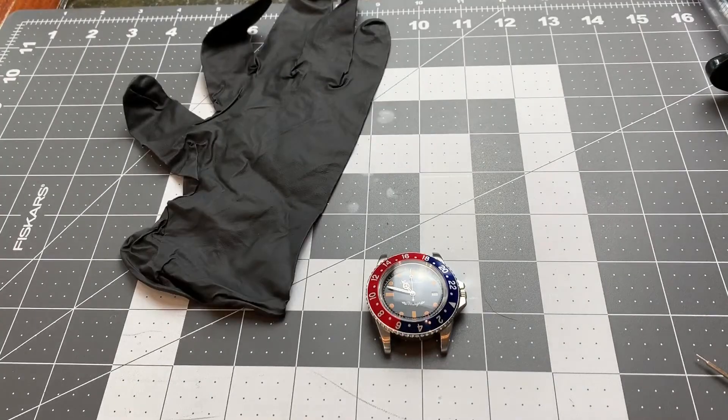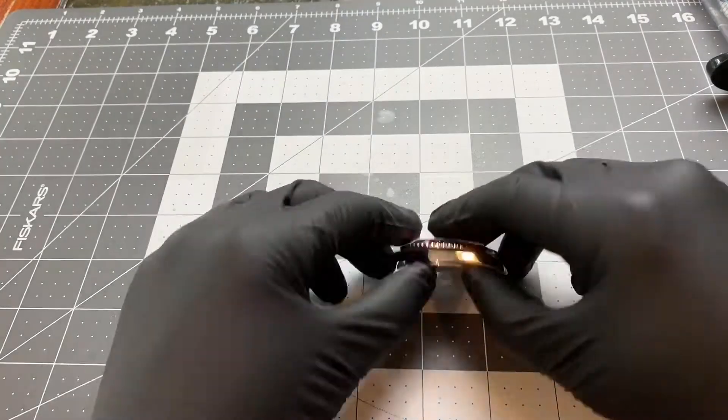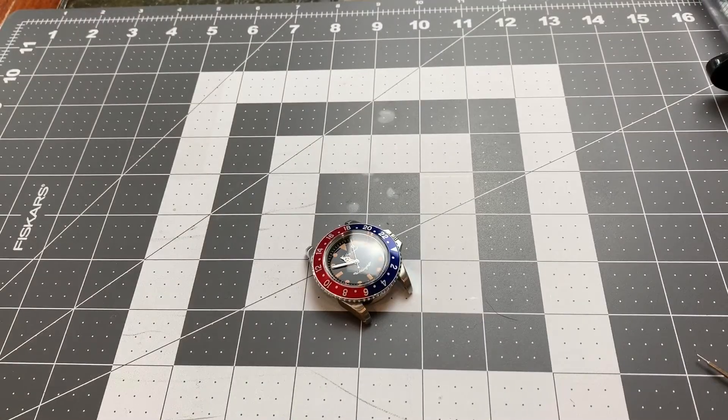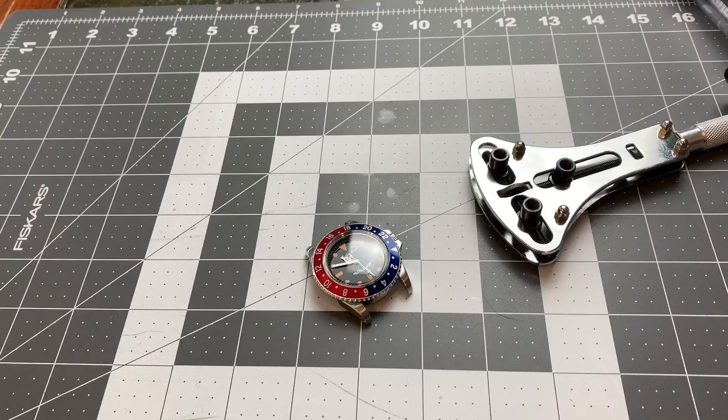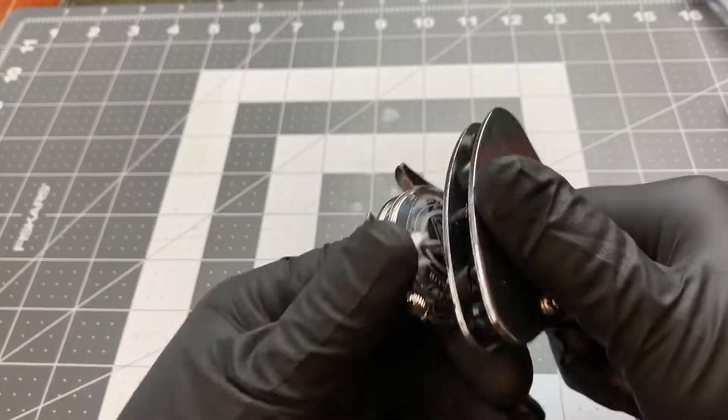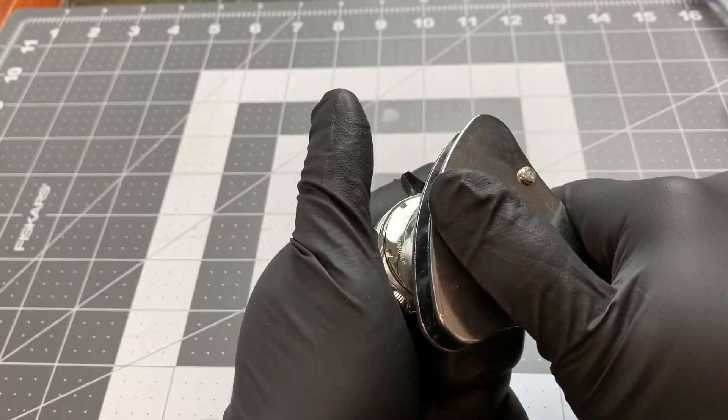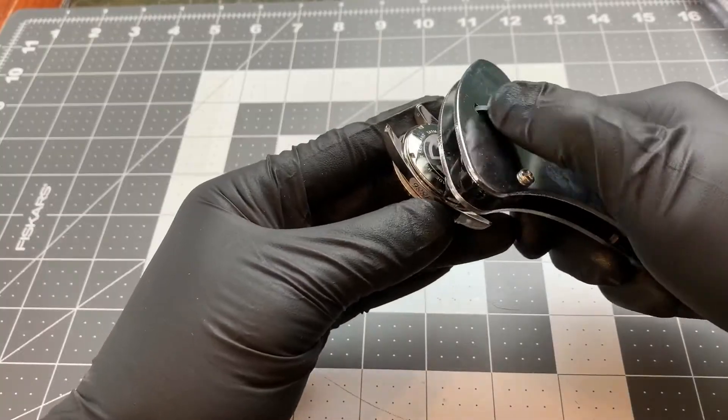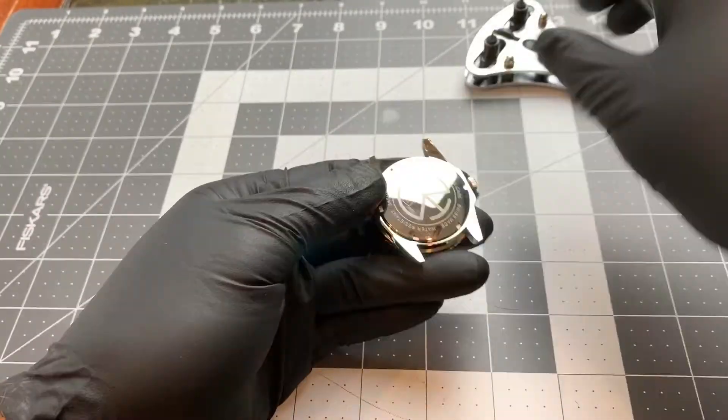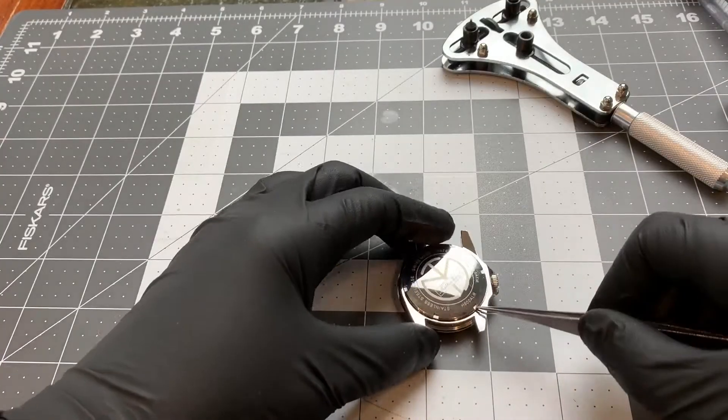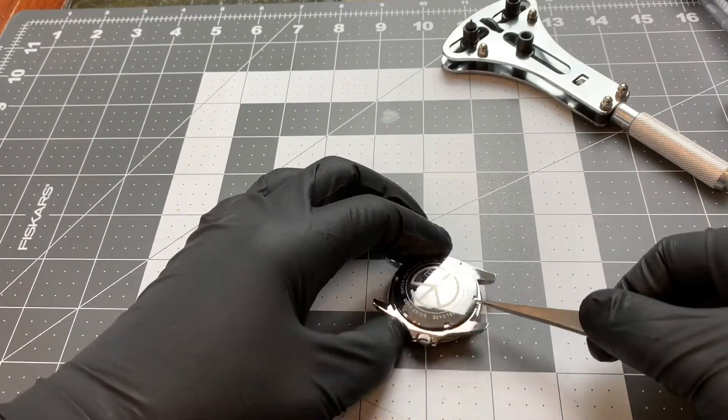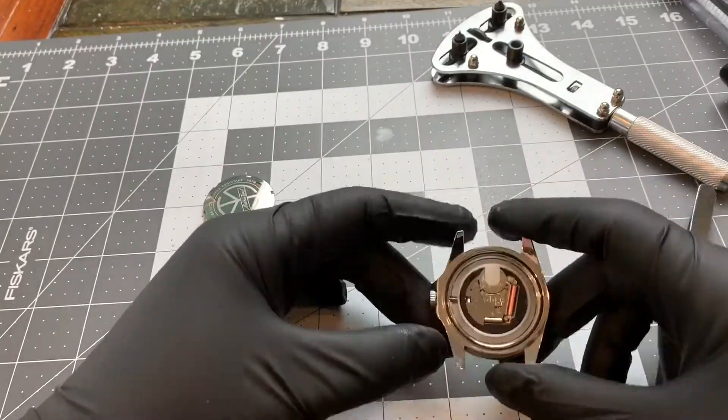Next thing you need to do is toss on some latex gloves or something similar. This is about to get really messy. Imagine dealing with olive oil the entire time. Next, you want to take off the case back. I used a case back opener that came with a kit I got for Christmas. It worked quite well. Make sure that you don't ruin any gaskets that may be inside the watch, because you're sealing oil inside the watch. You don't want it to leak anywhere.